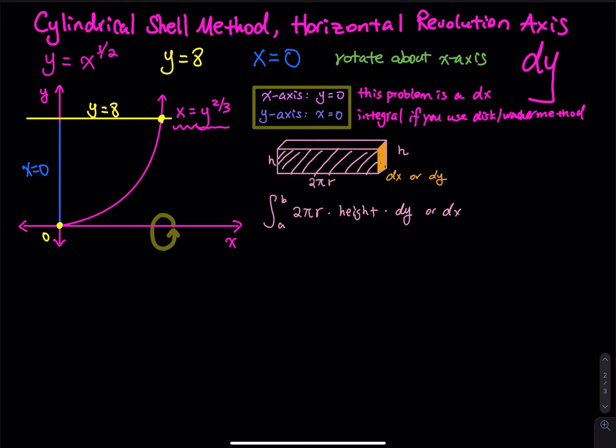First of all, we have y equals x to the 3/2, y equals 8 in yellow, and x equals 0 in blue. So we have a region bounded by these three functions, but one thing you have to pay attention to is we will be using a dy integral. So when you do the graph, you have to graph x equals some y.